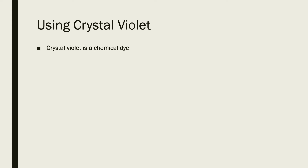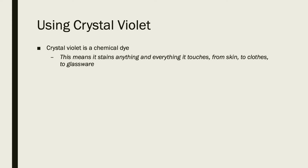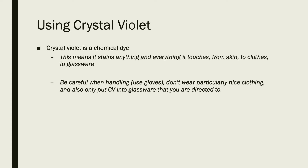A couple of things to be aware of for the experiment: crystal violet is a chemical dye, and anything that's a chemical dye will stain pretty much anything and everything it comes into contact with — that includes skin, clothes, and glassware. While doing the experiment, wear gloves, and probably don't wear any clothes you're particularly fond of, just in case something spills. We're not using very large volumes, but it doesn't take a lot of this stuff even at really tiny concentrations to make a small stain.